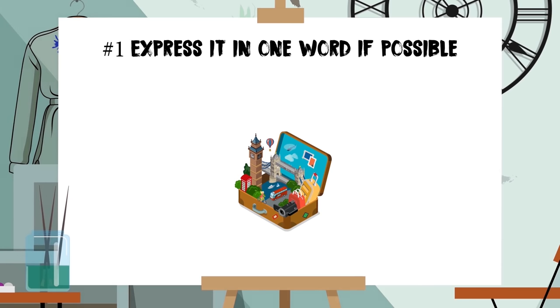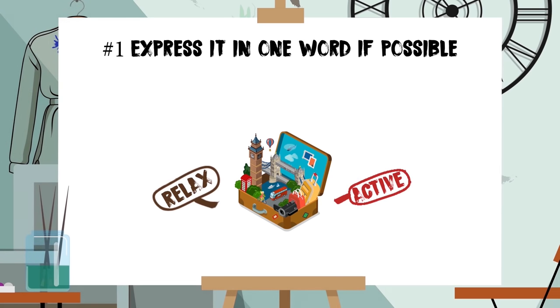The idea comes to life from central image to branches. We need to express those ideas in one word if possible — this is crucial. If we start writing essays on our branches, we will get stuck for sure. It is a lot easier and more natural to create new branches from single words than from sentences or statements. This is simply how our brain works.